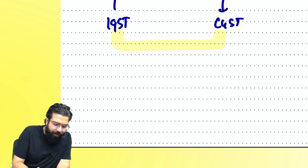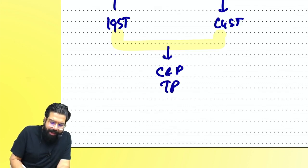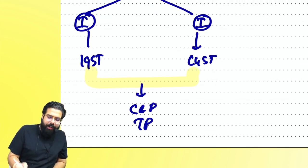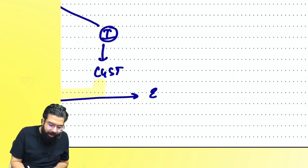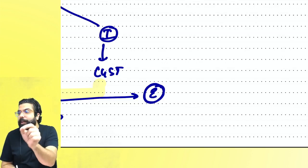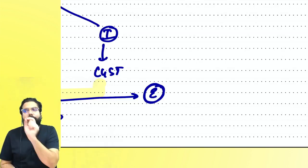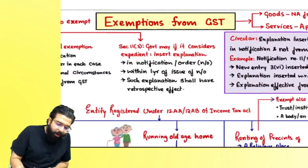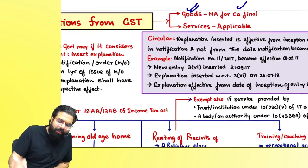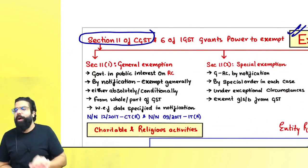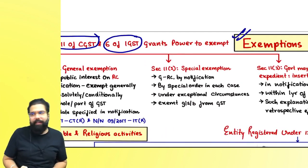Once GST is levied, it has to be collected and paid by a taxable person. Before a taxable person collects and pays, he will have to see if it is falling under an exemption — if it is, then GST need not be collected and paid. Exemption is given by the government using the power under Section 11 of the CGST Act and Section 6 of the IGST Act. Exemption is with respect to goods also, but goods exemption is not applicable for your CA Final exam — only some services exemptions are applicable.